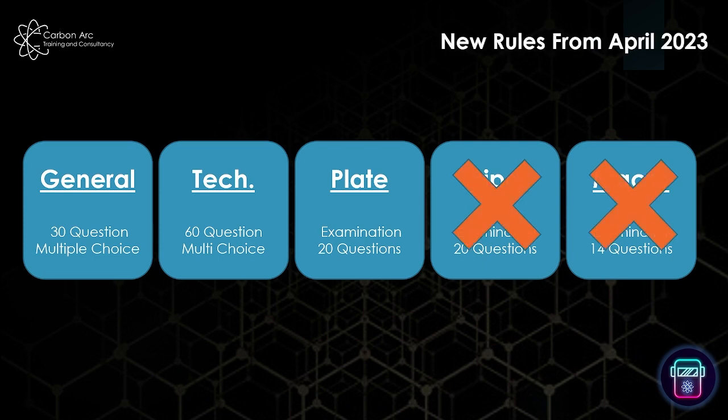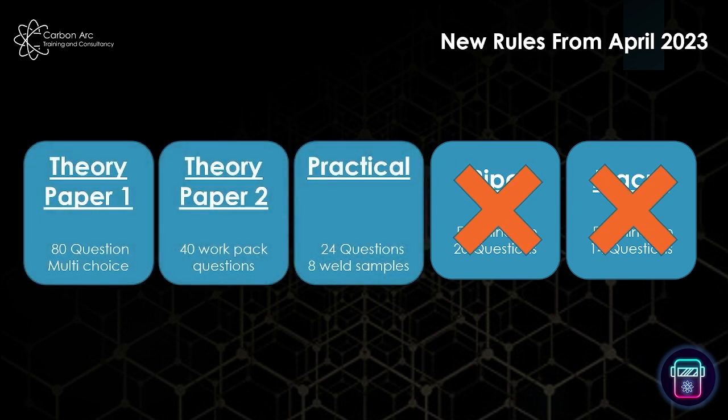We're losing the pipe and the macro — they're gone. From April, any new candidate will no longer do those exam pieces. That leaves us with the general, technology, and plate, which are then being amended, changed, and added together, which will give us a Theory Paper One, Paper Two, and a practical exam. That's what we're going to go through right now.